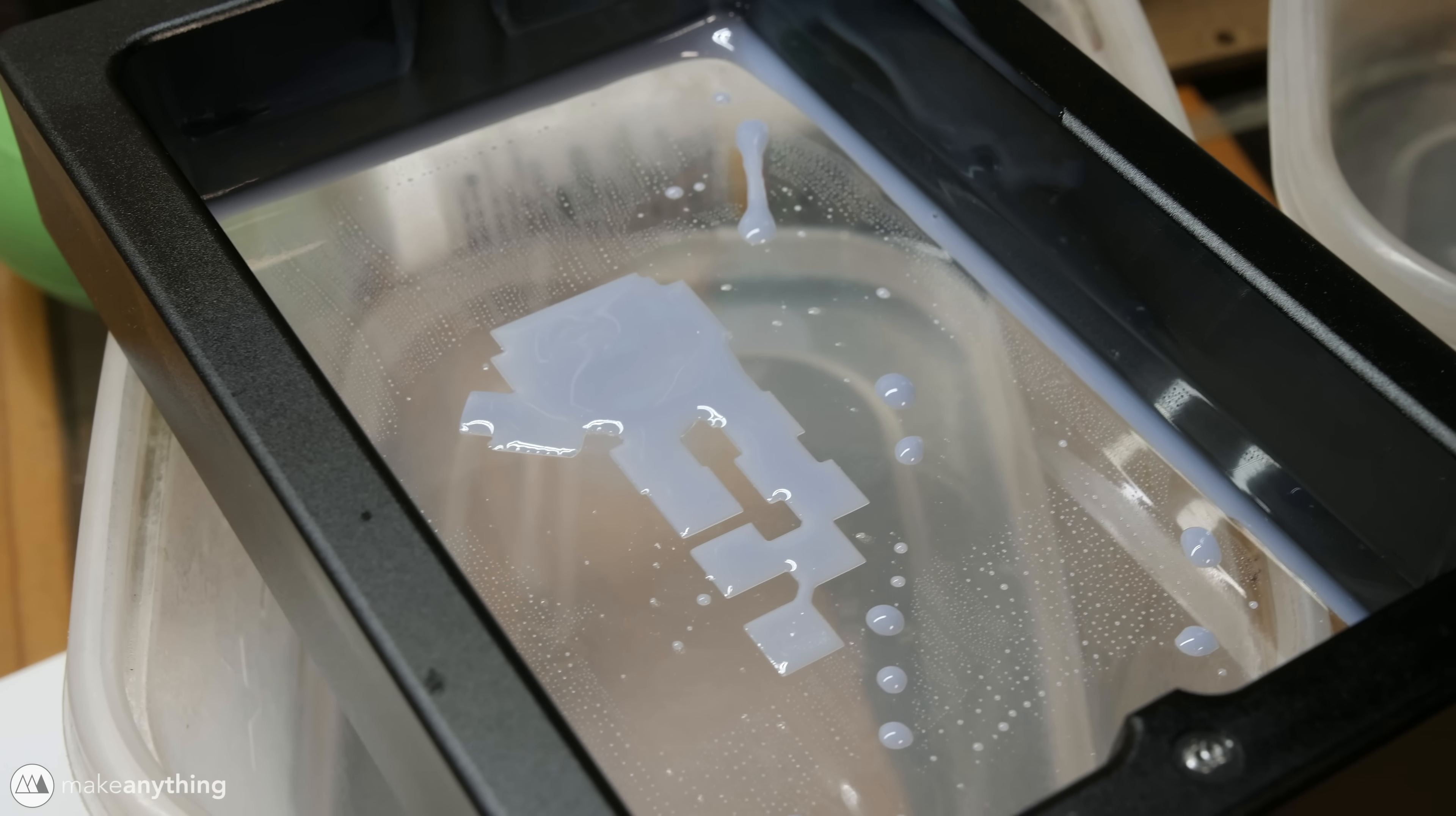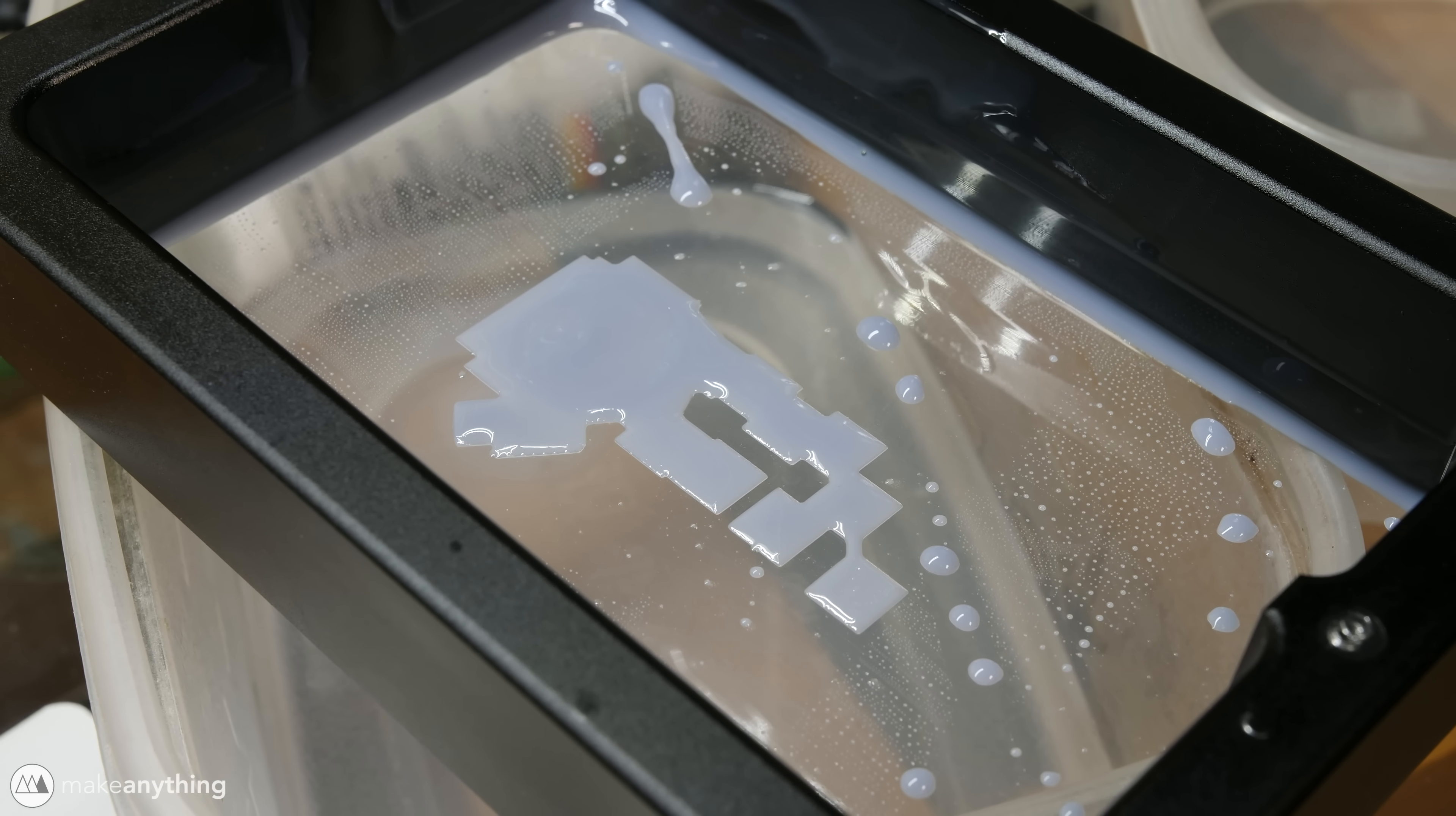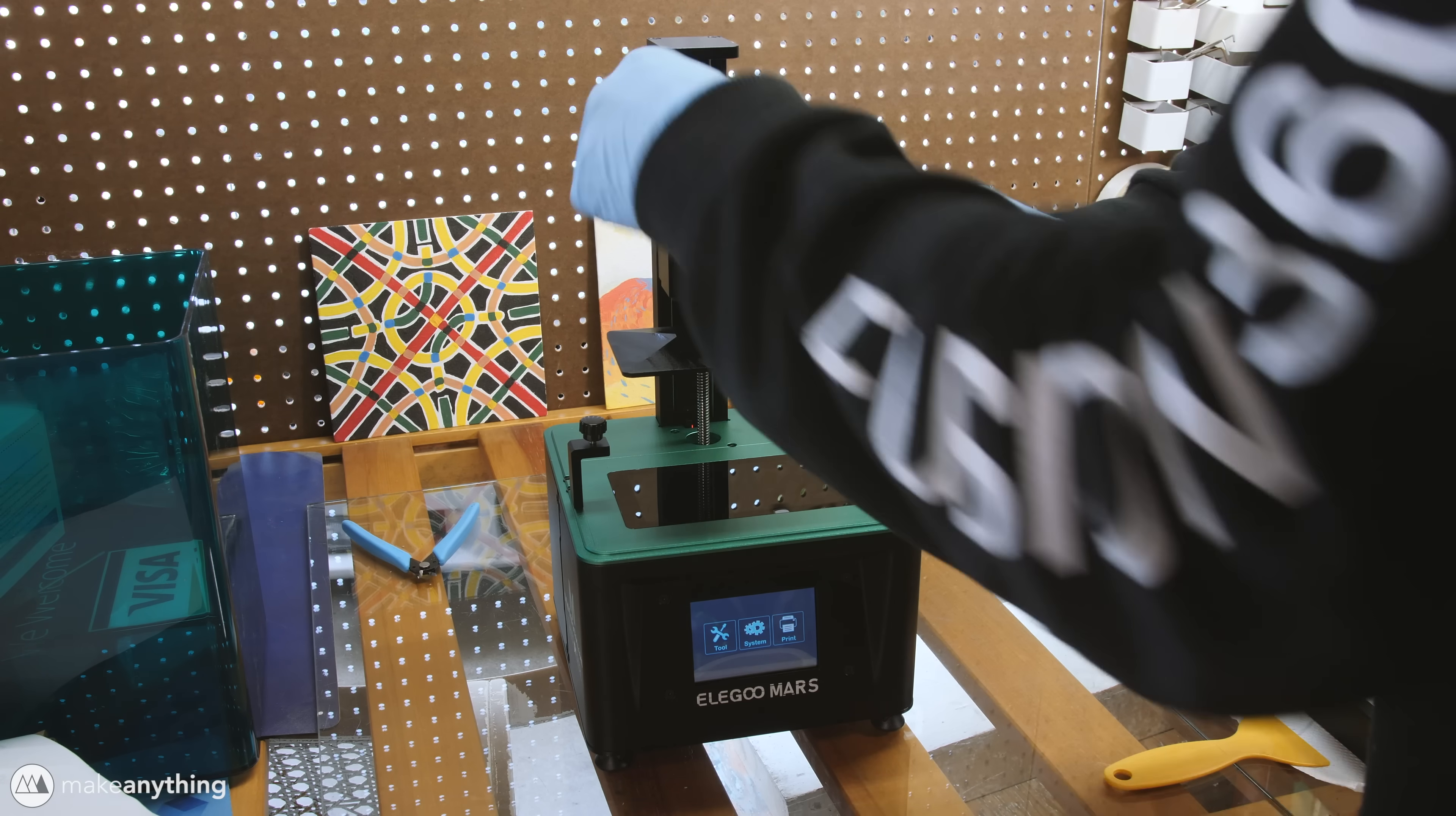After draining the resin from the vat you can see here that the first layer of the file did in fact cure but the problem is it was sticking to the bottom of the vat when it should be sticking to the top of the build plate.